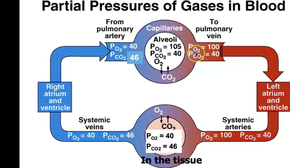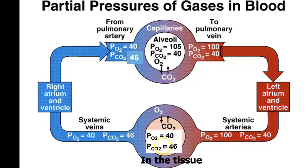That blood is going to go to the left atrium and ventricle to be pumped to the systemic arteries. Then in the tissues, it's getting highly oxygenated blood with a low amount of carbon dioxide. When it gets to tissues, the partial pressure of oxygen is lower, so oxygen moves from the blood into tissues. The partial pressure of CO2 is higher in the tissues than in the blood, so CO2 is dumped into the blood moving down its pressure gradient, and then it can circulate back to the capillaries adjacent to the alveoli.